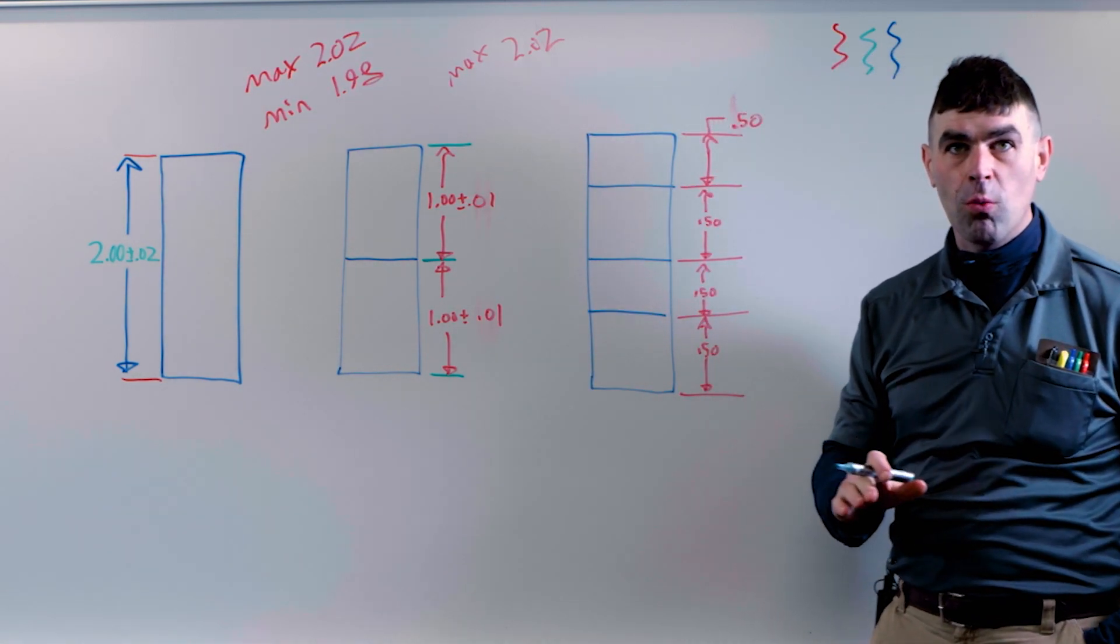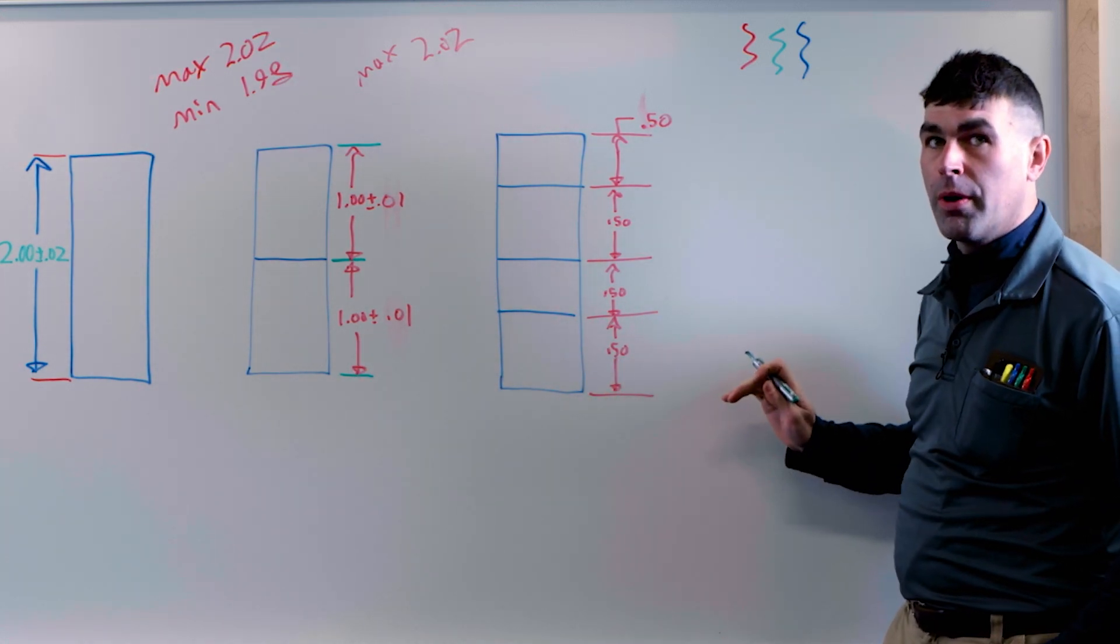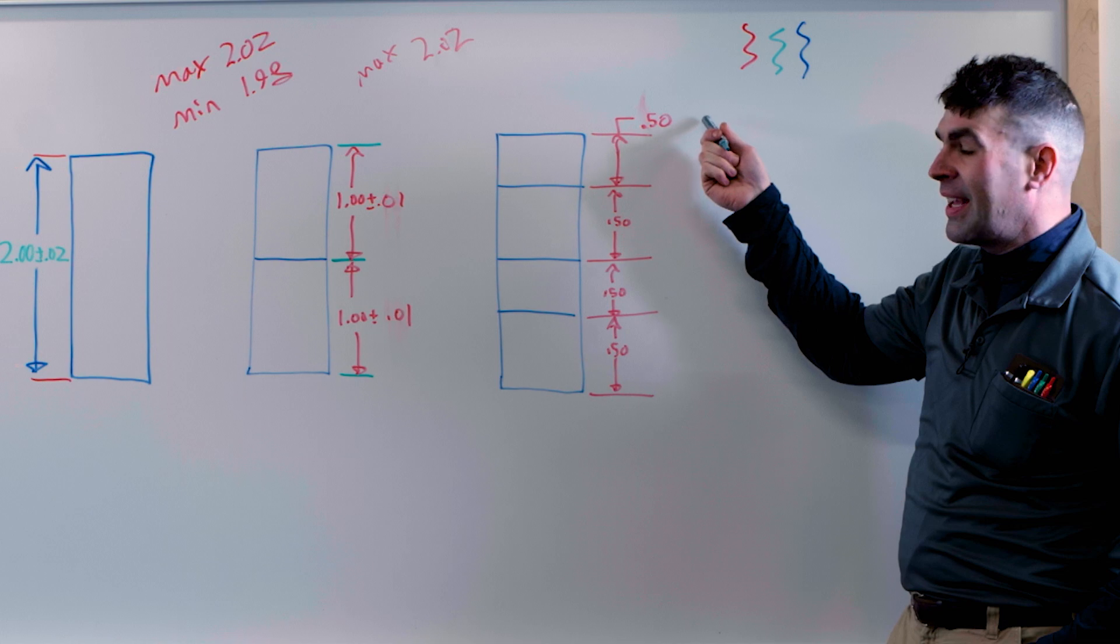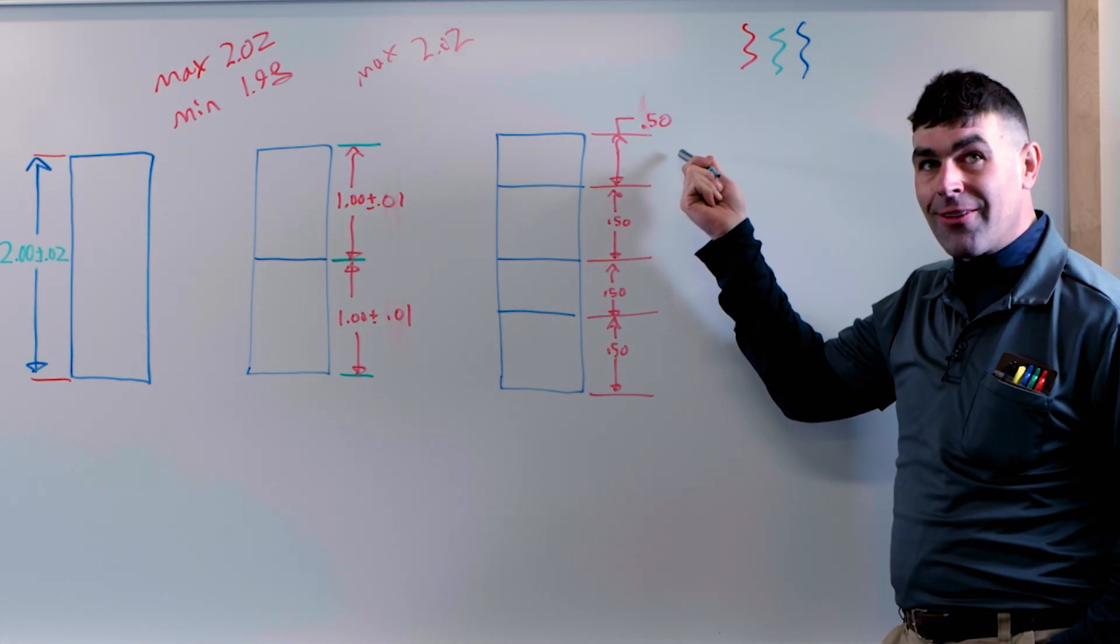Now to take it one step further, although you probably get the concept from this, if we go to four parts, now we're down to a half an inch per block. We've got to cut the tolerance again.